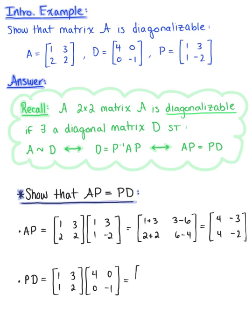Now we use the row-column rule to find the product of matrix P with matrix D. The first row times the first column is 4 plus 0; first row times the second column is 0 minus 3; second row times the first column is 4 plus 0; second row times the second column is 0 minus 2. Which leaves us with the final answer of 4, negative 3, 4, negative 2.